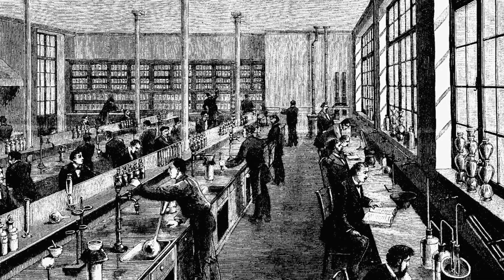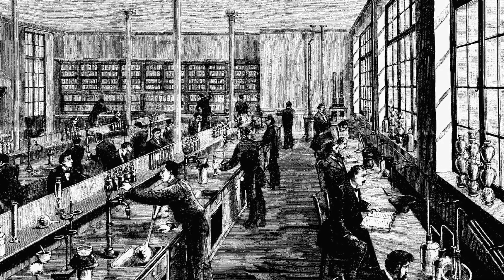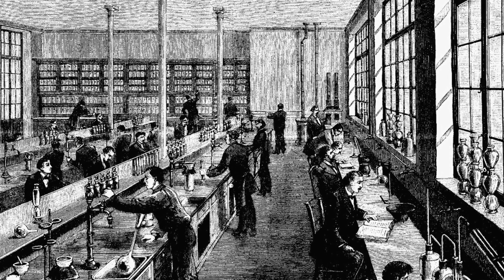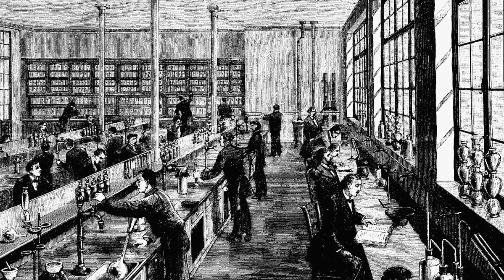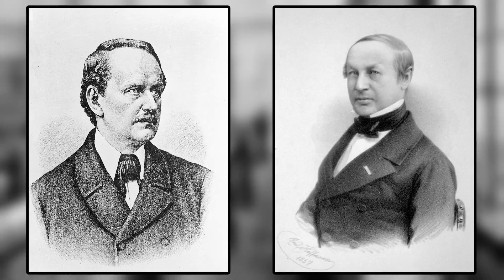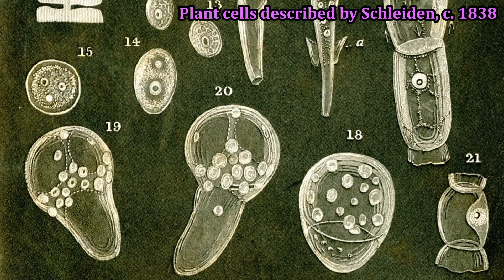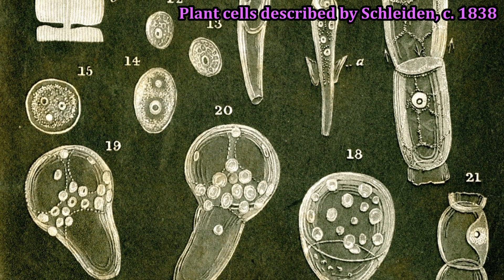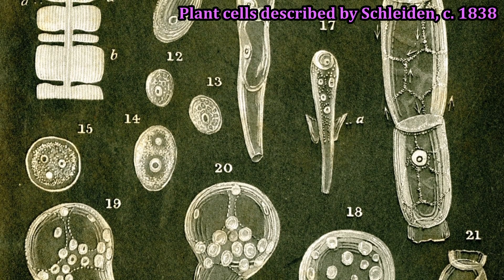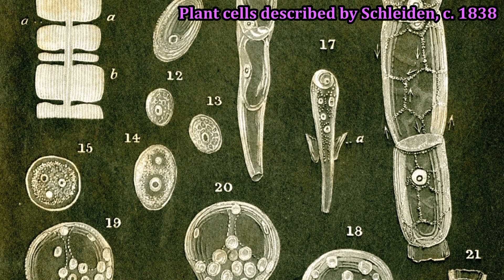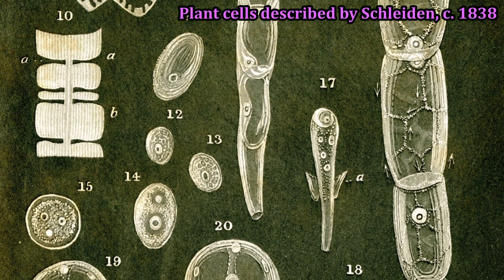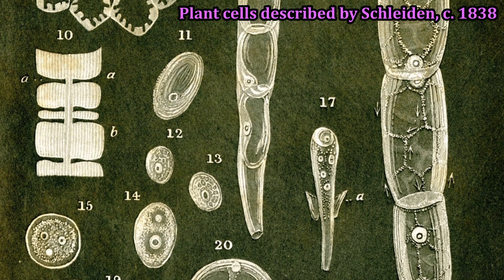The first half of the 19th century saw the rise of cell theory, spearheaded by two German scientists, Matthias Schleiden and Theodor Schwann. These two minds sparked a biological revolution and brought forth a new world dominated by countless tiny living organisms unseeable to the naked eye.